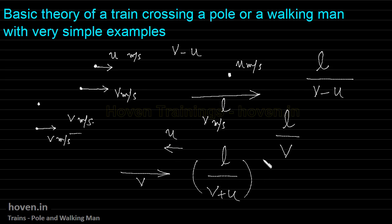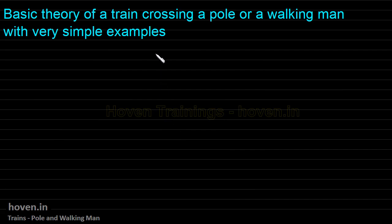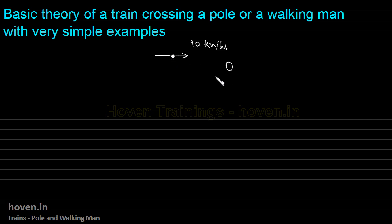Let me test your understanding. Consider a situation where a train is moving towards the right at 10 kilometers per hour and a man is sitting inside the train. What is the relative speed of the man with respect to the train? Since the man is sitting in the train, the speed of the man with respect to the train will be zero. The speed of this man with respect to the earth will be 10, because he is moving with the train — he is moving at 10 kilometers per hour relative to the ground.